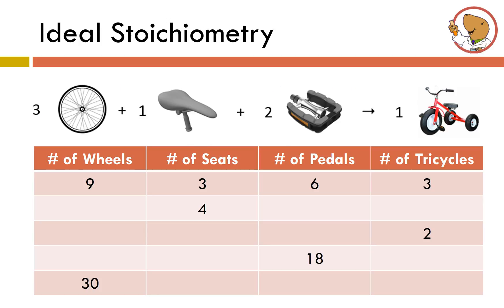So here's another analogy. Let's say that you are building tricycles. You need three wheels, one seat, two pedals, and from there you can make one tricycle. If we've got nine wheels we would need three seats, six pedals, that way we can make three tricycles. Let's say you have four bike seats. Now if it's in a three to one ratio I quadrupled the number of seats so I'd have to quadruple all of the coefficients. Three times four is twelve. I would need eight pedals and that would allow me to make four tricycles.